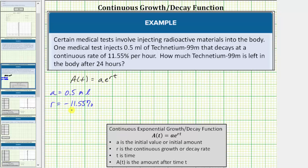This also must be expressed as a decimal. Negative 11.55% is equal to negative 0.1155. And because the decay rate is per hour, t equals time in hours.